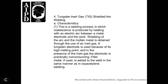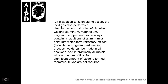F. For tungsten inert gas (TIG) shielded arc welding: The process is characterized by the use of an electric arc between the metal workpiece and a tungsten electrode, with the arc and molten metal shielded through the use of inert gas. The shielding gas also performs a cleaning action beneficial for welding aluminum, magnesium, copper, and aluminum alloys containing beryllium, which form refractory oxides. With the tungsten inert gas welding process, welding can be made in any position on practically all metals without the use of flux, as no significant amount of oxide is formed.